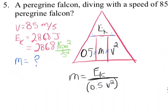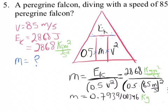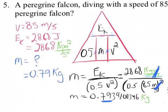With the triangle technique, if you cover up the M, you're left with EK divided by 0.5 times V squared. When you substitute in, you've got 2,868 kilogram meters squared per second squared in the numerator, and 0.5 times 85 meters per second squared in the denominator. The meters squared per second squared cancels off, and the last unit you have left is kilograms. Since the original question had two significant digits, the answer is 0.79 kilograms. The peregrine falcon is pretty light.